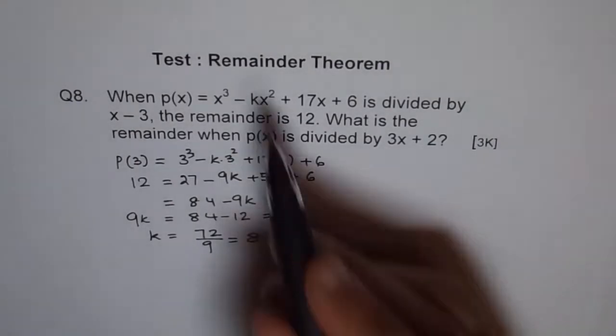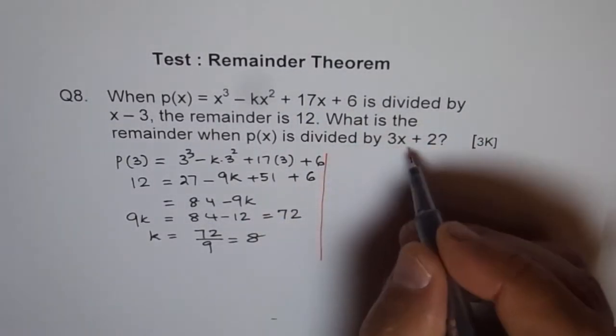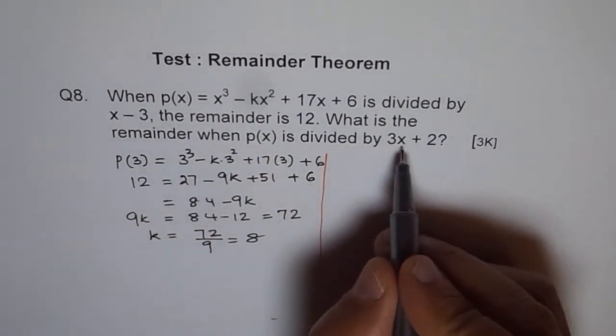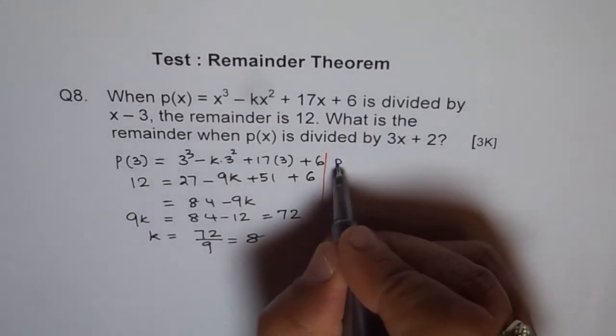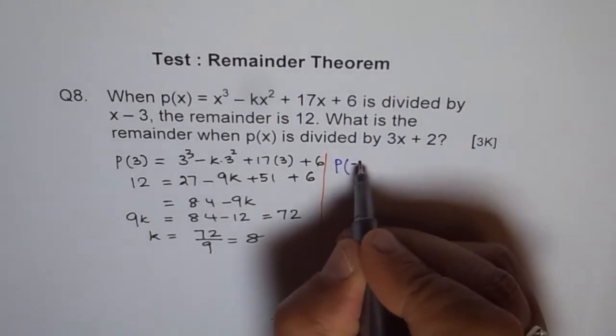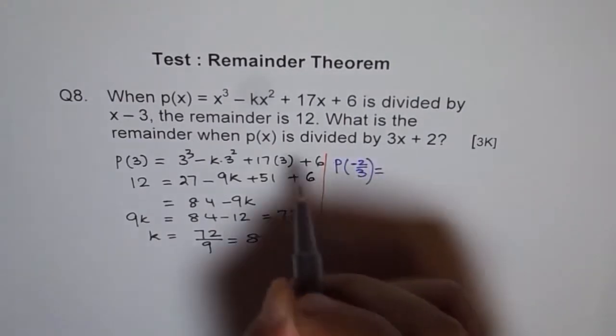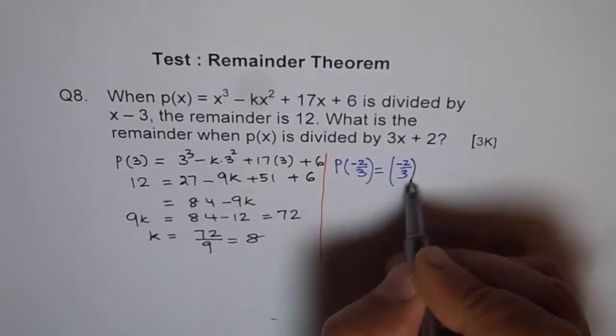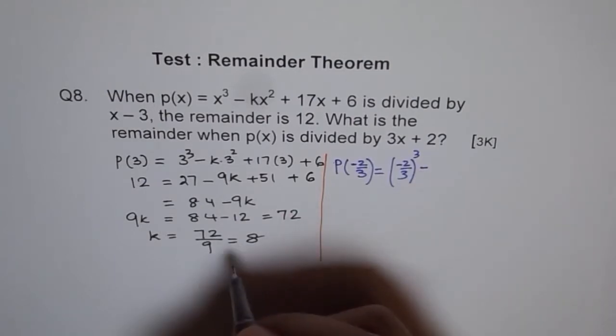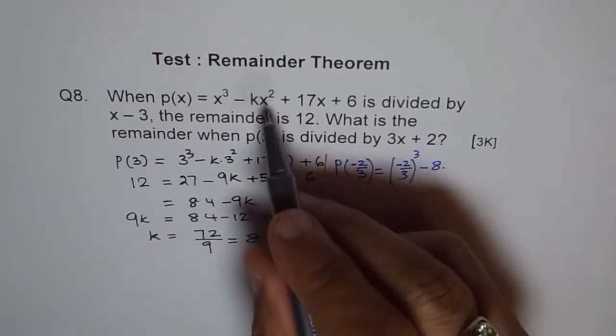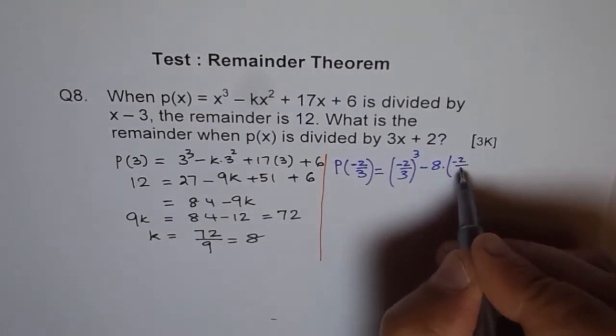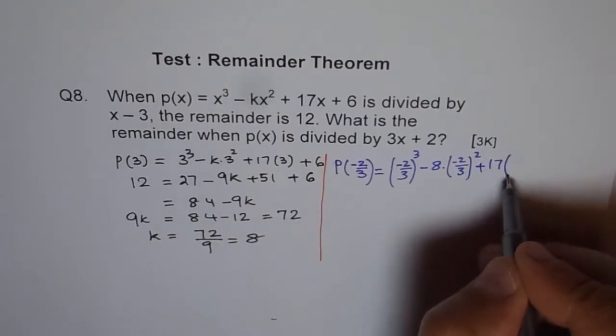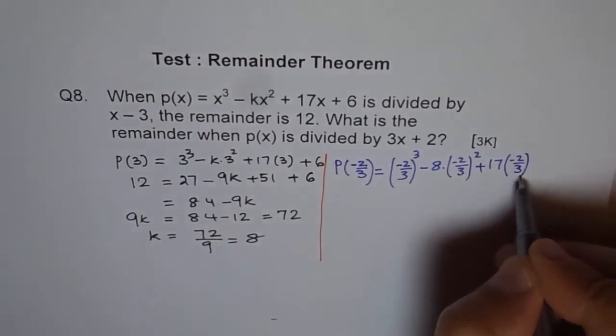Now we can plug in 8 here and find out our answer for this. The remainder is for value of function to be minus 2 over 3. So p(minus 2 over 3) equals minus 2 over 3 cube minus 8 times minus 2 over 3 square plus 17 times minus 2 over 3 plus 6.